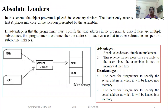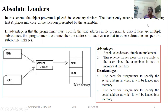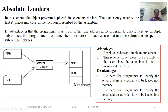The object program is placed in secondary storage devices. The loader only accepts the machine language text and places it into core at the location prescribed by the assembler — not by the user — because every machine-level language instruction specifies how many bytes of memory are required, and line numbers are assigned accordingly.